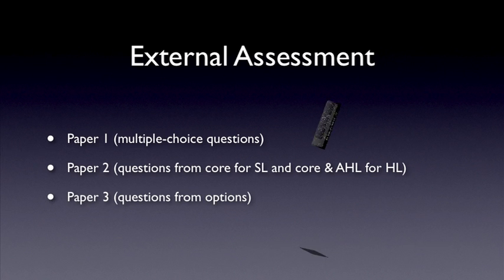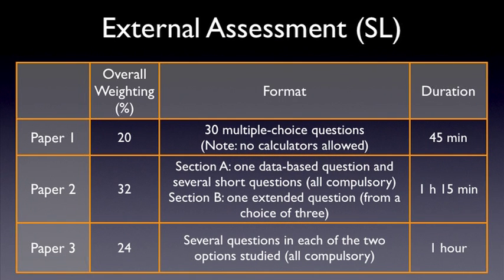Now let's have a closer look at each of the papers. For standard level, Paper 1 consists of 30 multiple choice questions and has a duration of 45 minutes. The use of calculators is not allowed for this paper. Paper 2 consists of two sections: Section A and Section B. All questions in Section A are compulsory. In Section B you have to answer one question from a choice of three. The paper is 1 hour and 15 minutes long.